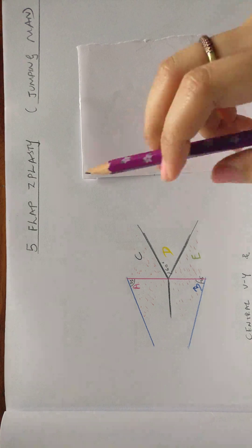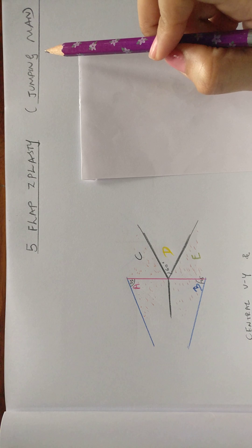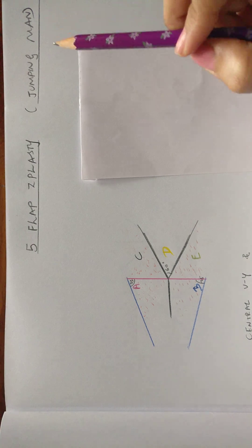Another modification of a Z-plasty is a 5-flap Z-plasty, which is also called as a jumping man flap. This modification is quite commonly asked in examinations and in Viva.